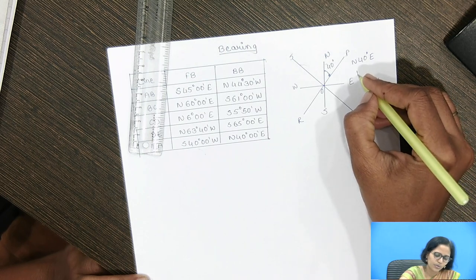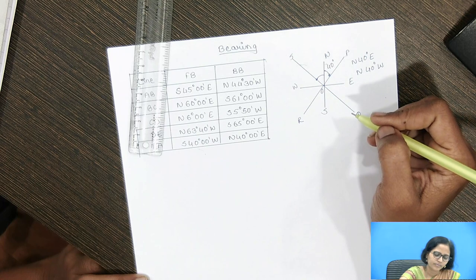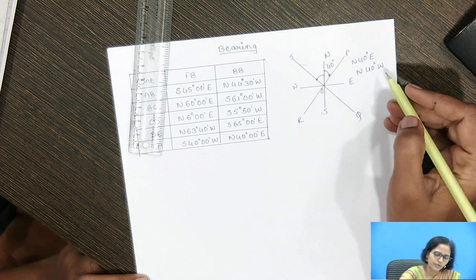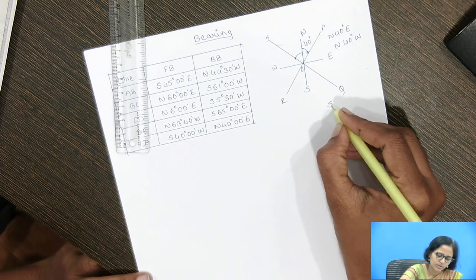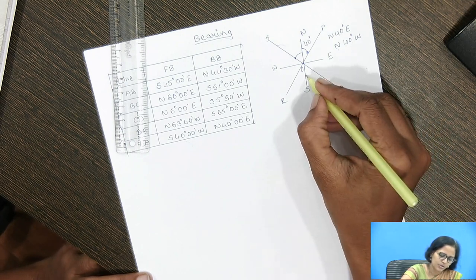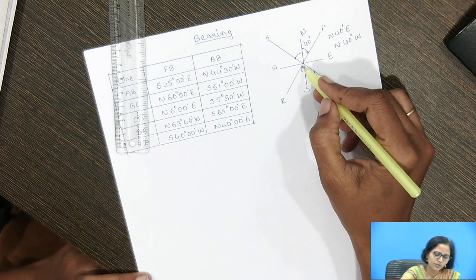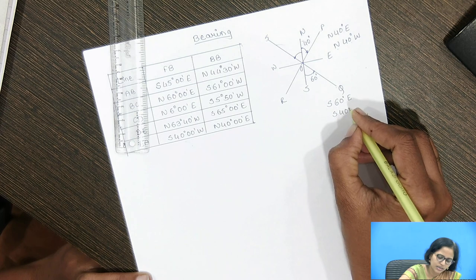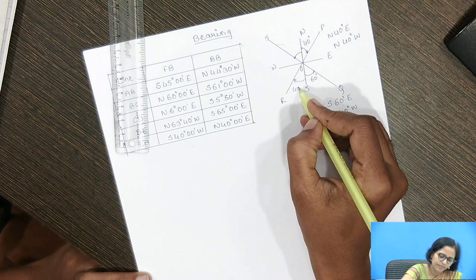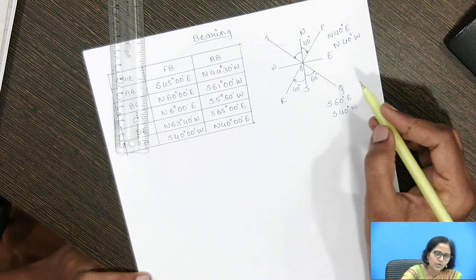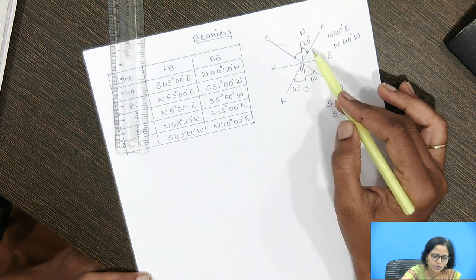If the angle is given as north 40 degrees towards the west, the survey line O-S will be drawn in the second quadrant. If the bearing of line O-R is given as south 40 degrees west, it means from the south towards the west side it makes an angle of 40 degrees. In quadrantal bearing, the angles are always specified either with respect to north or with respect to south.